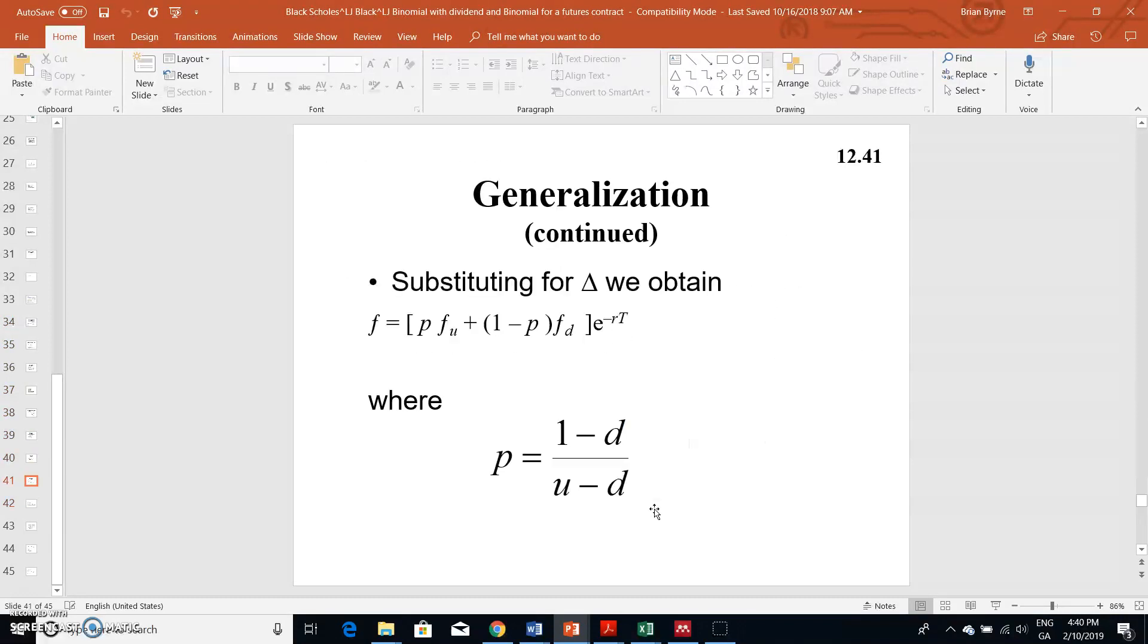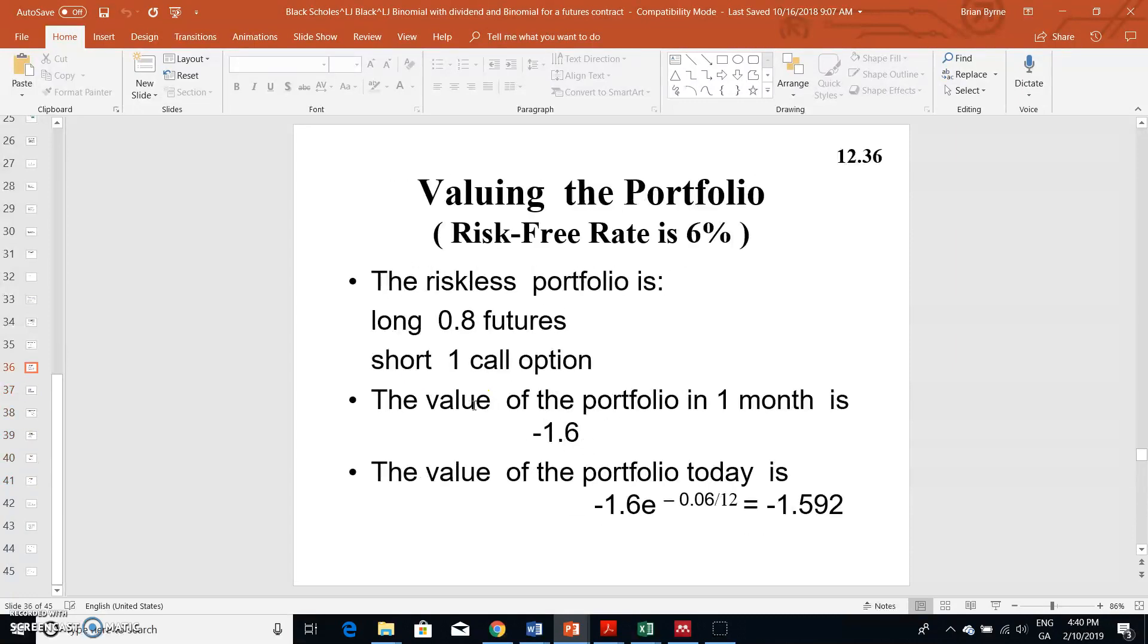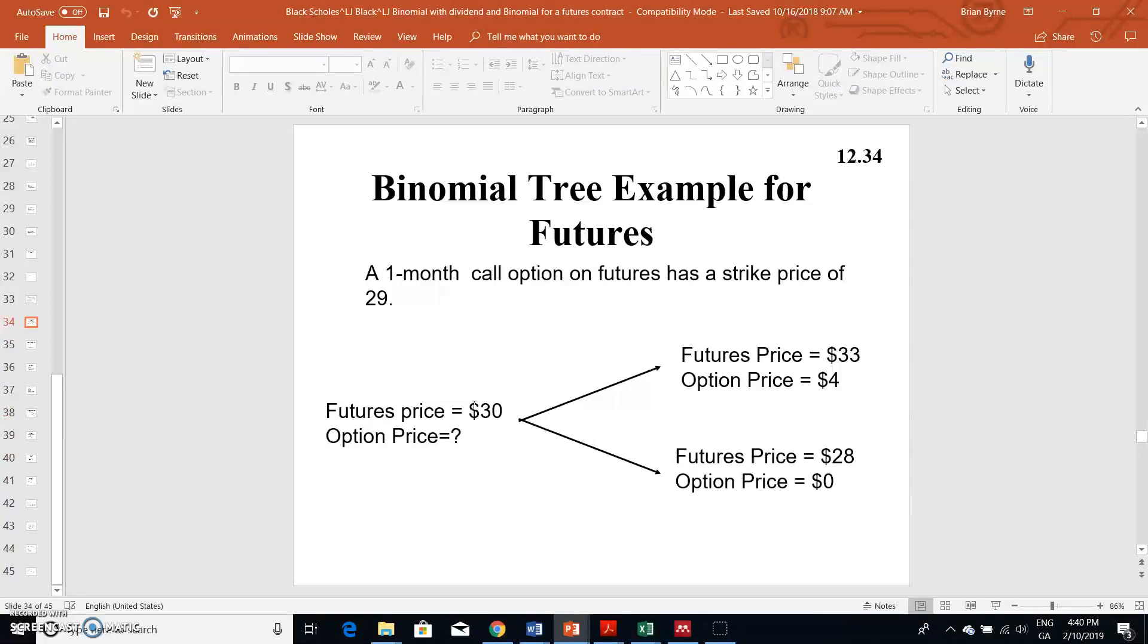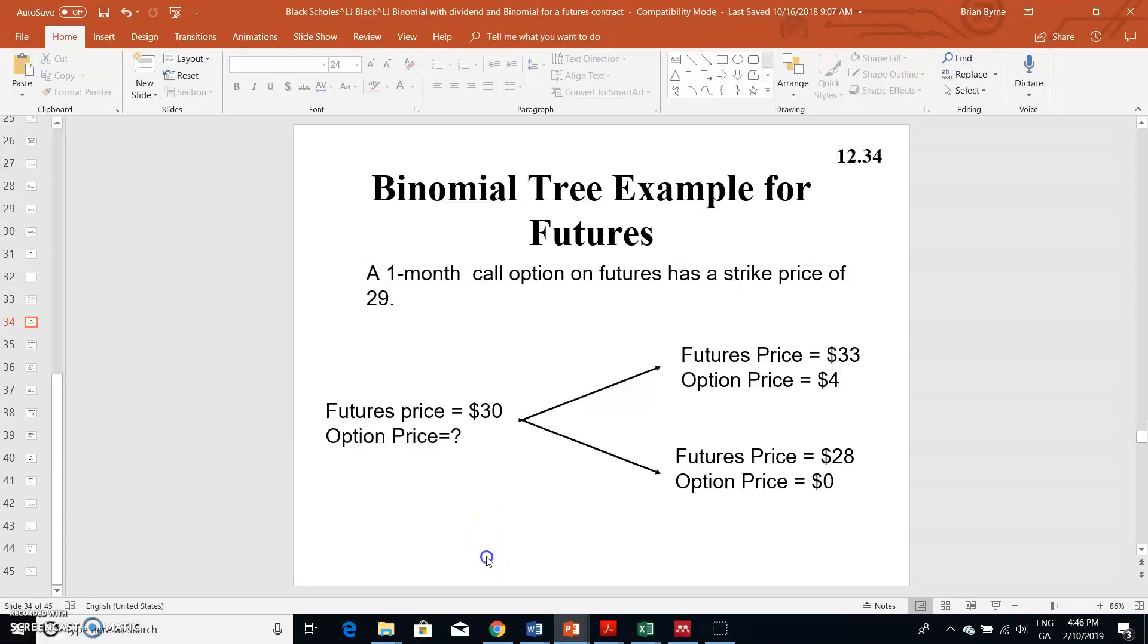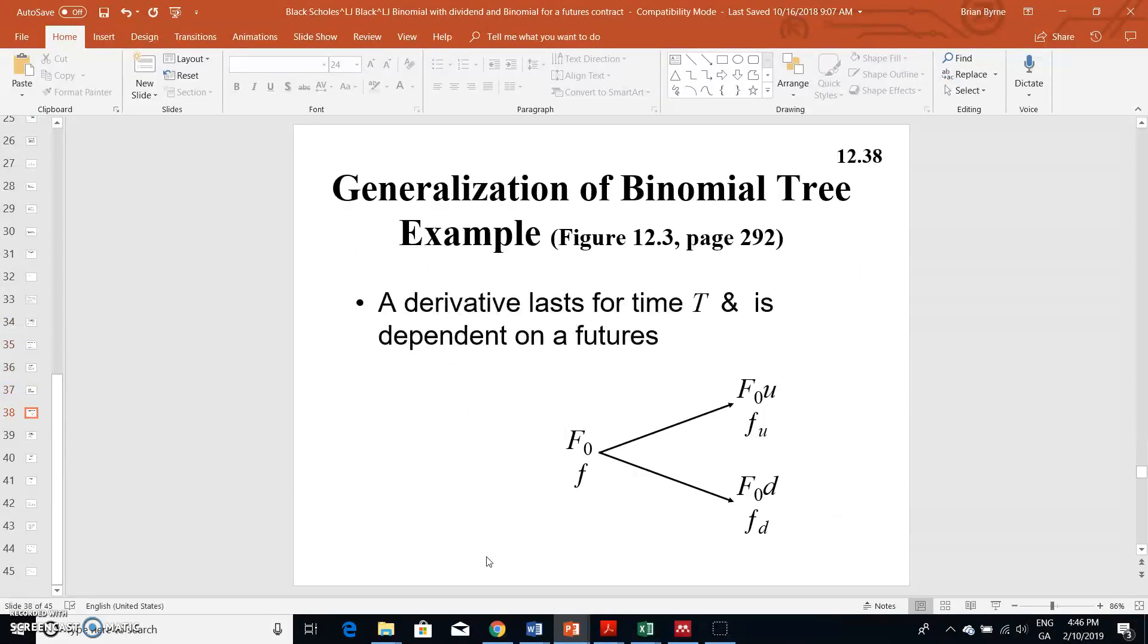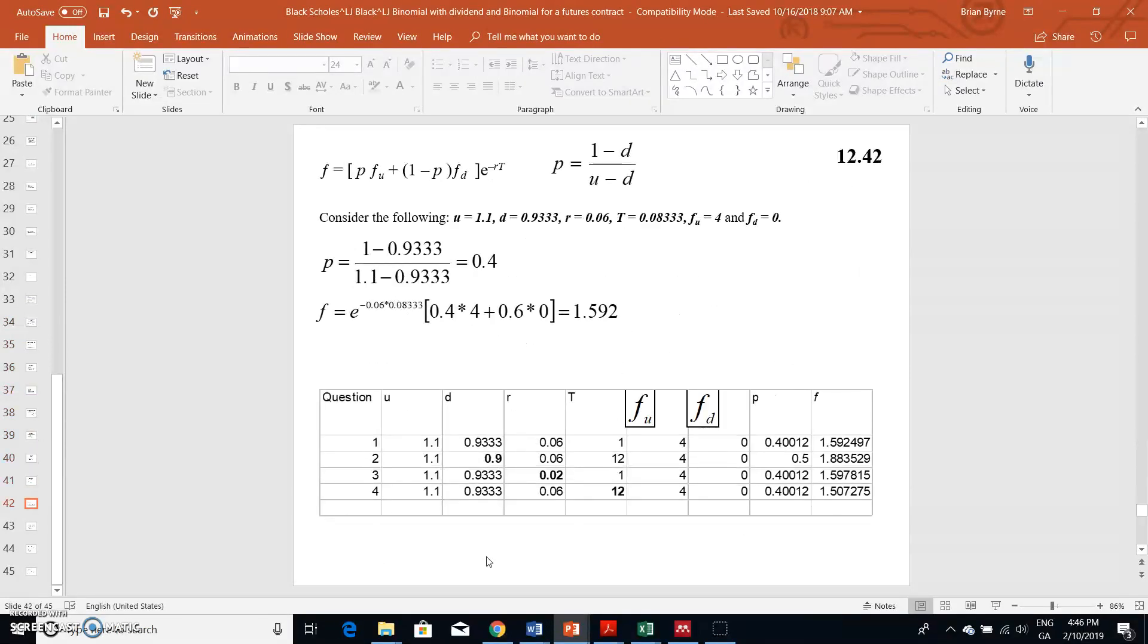We could also have taken these two formulas and estimated the value of the option in this instance. We could have reconstructed the parameters given here: futures price of $30, futures amount time period $33 or down to $28, strike price of $29, expiry of one month.